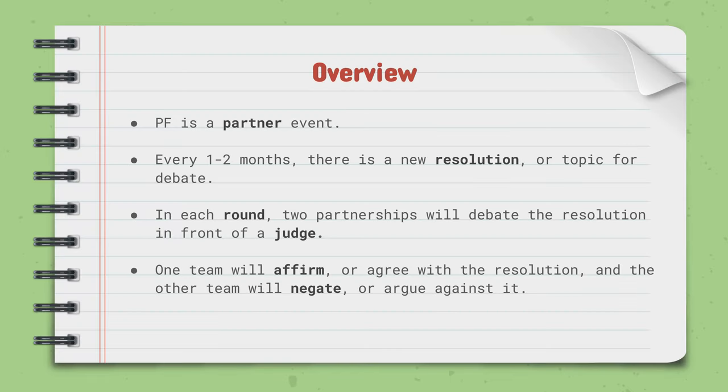Public forum is a partner event. That's one of the things that makes it different from other debate events and speech events like Lincoln-Douglas debate, original oratory, etc. It's also a debate event — every one to two months there's a new resolution or topic which the teams debate in the round. In each round, two partnerships debate the resolution in front of a judge who decides who wins. One team affirms the resolution, agreeing with it, and the other team negates or argues against the resolution.